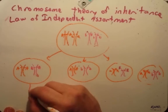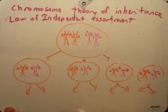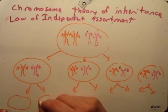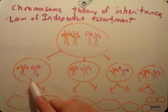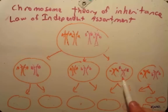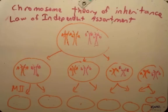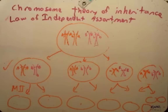Now these will go on to make two cells each where we just pull the sister chromatids apart. I'm not going to draw all of those, just in the interest of time. But essentially it's going to be big A big B, big A big B, big A little b, little a big B, and so forth. Because meiosis II is just pulling the sister chromatids apart. This is where independent assortment is explained.